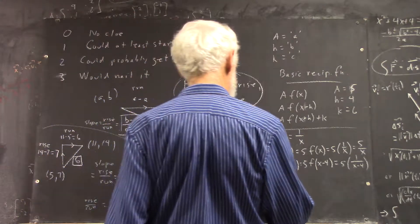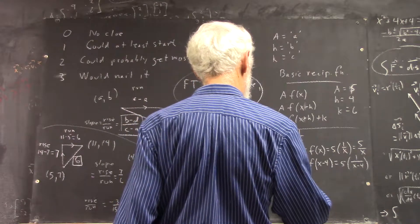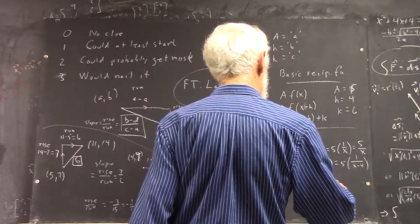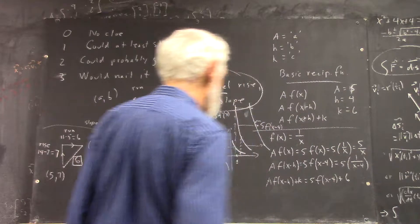Okay. So, then, next one's going to be 5 f of x minus 4 plus 6. What's that going to do?